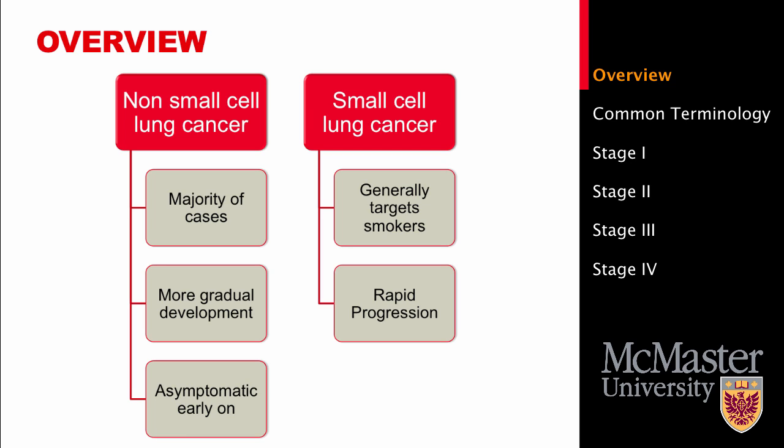Small cell lung cancer is usually associated with smoking and is very rare for non-smokers to develop. It often spreads rapidly, so your doctor may recommend the use of chemotherapy over surgery in treating it. Small cell lung cancer gets its name from its small appearance under a microscope.